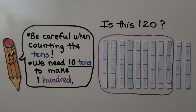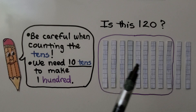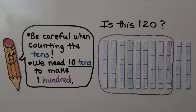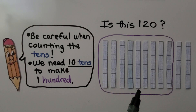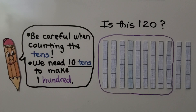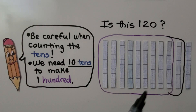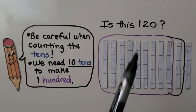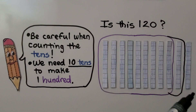We have to be very careful when counting the tens. We need ten tens to make a hundred. So if somebody circled this group of tens, is this one hundred twenty? Let's count them: one, two, three, four, five, six, seven, eight, nine. There's only nine tens circled here — so that's wrong. It needs one more ten in the group to be ten tens. This is not one hundred twenty. This is one hundred ten.